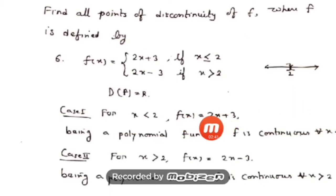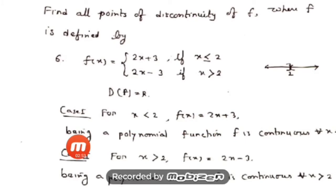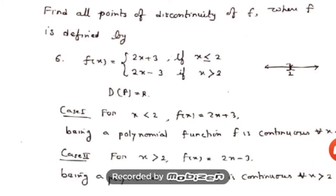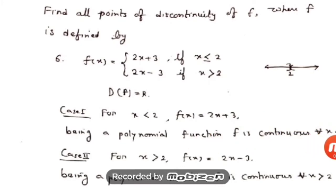For x less than 2, f(x) = 2x + 3, which is a polynomial function. You know that a polynomial function is continuous for all real numbers. So the conclusion is: being a polynomial function, f is continuous for all x less than 2. This completes Case 1.